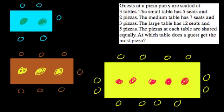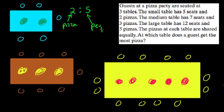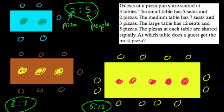What we really need are ratios — that's the heart of this problem. At the small table, the ratio of pies to seats is two to five. At the medium table, the ratio is three pizzas for seven people. At the large table, we have five pizzas for twelve people. The highest ratio of pizza to people will be the best table to sit at.